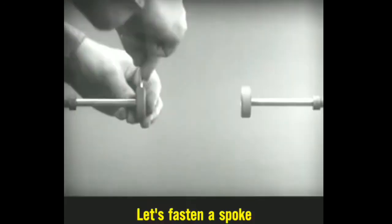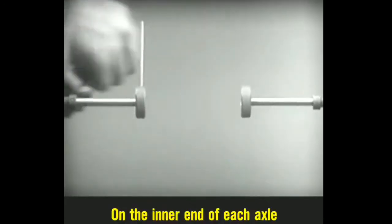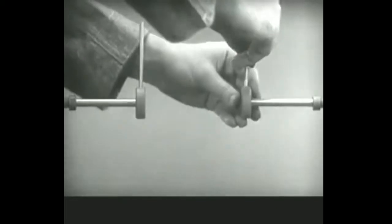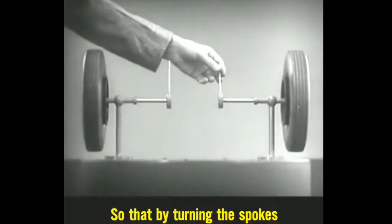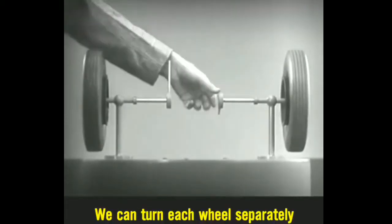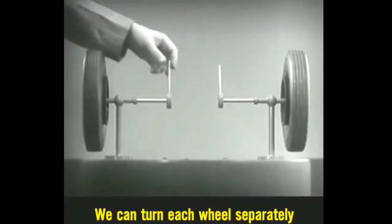Let's fasten a spoke on the inner end of each axle so that by turning the spokes, we can turn each wheel separately.